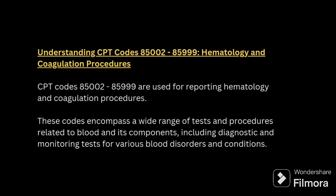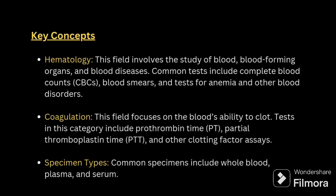CPT codes 85002-85999 are used for reporting hematology and coagulation procedures. These codes encompass a wide range of tests and procedures related to blood and its components, including diagnosing and monitoring tests for various blood disorders.